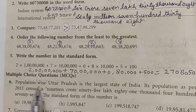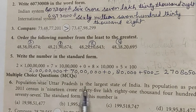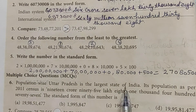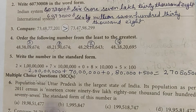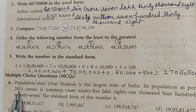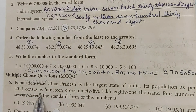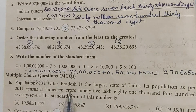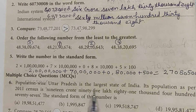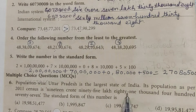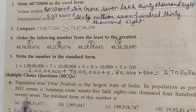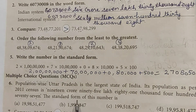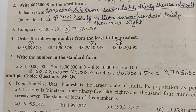Multiple choice questions: population-wise, Uttar Pradesh is the largest state of India. Its population as per the 2011 census is 19 crore 95 lakh 81,471. What is the standard form of this number?